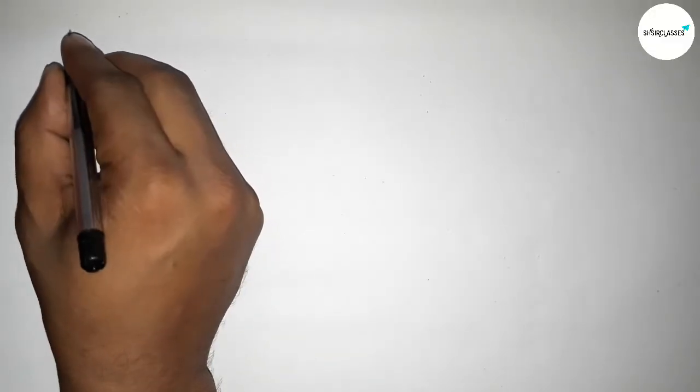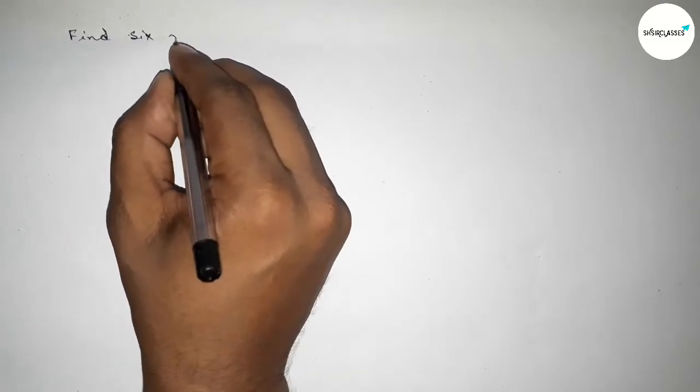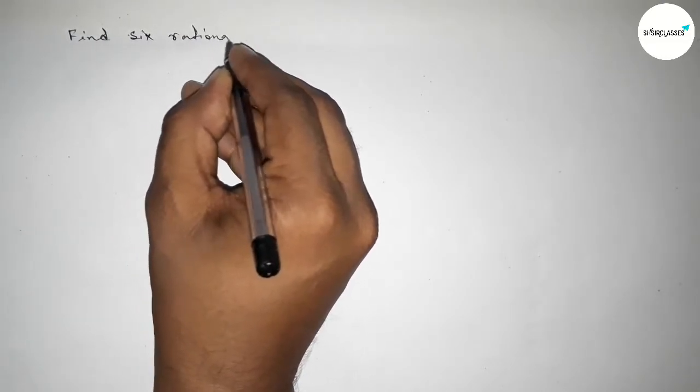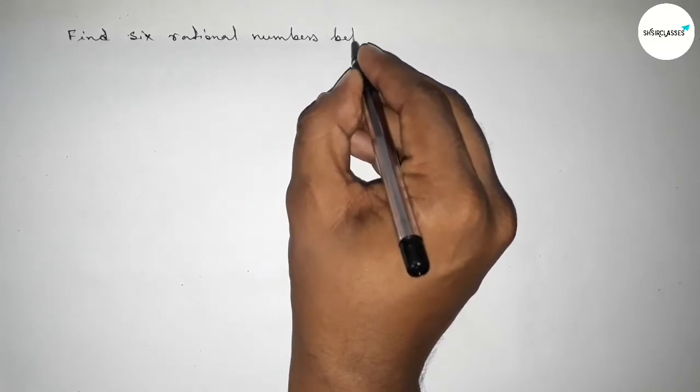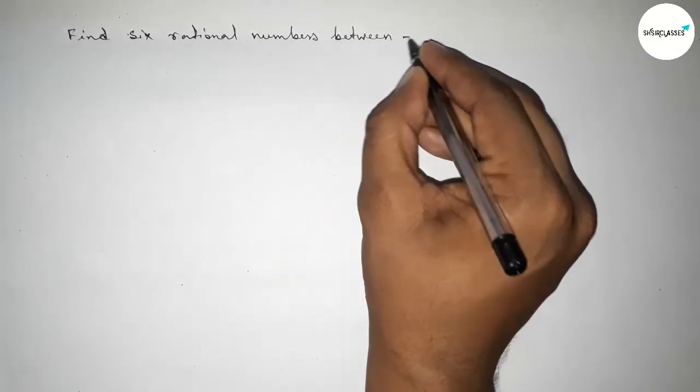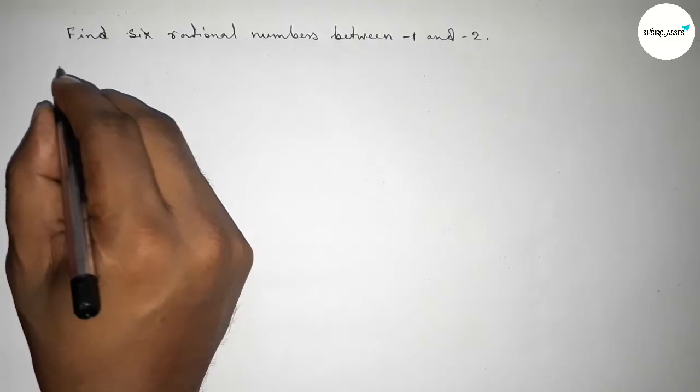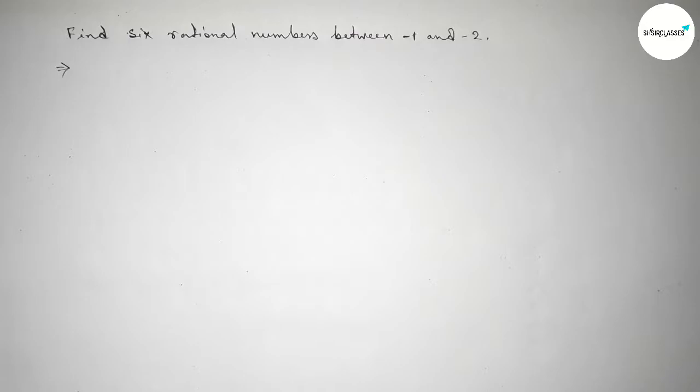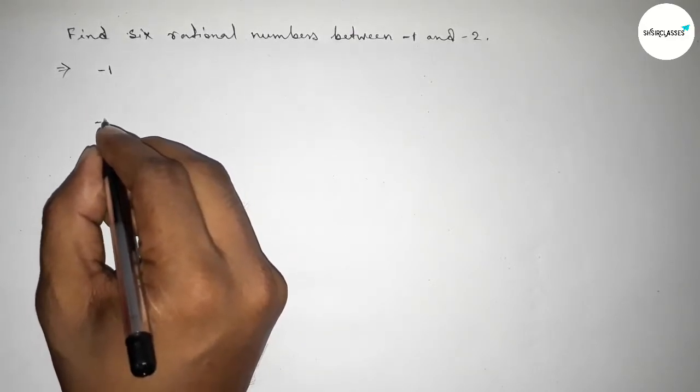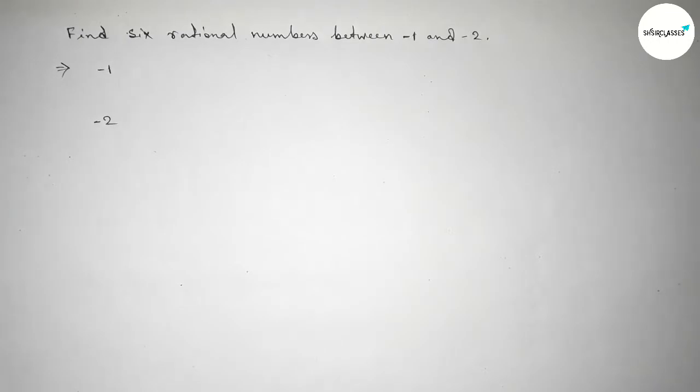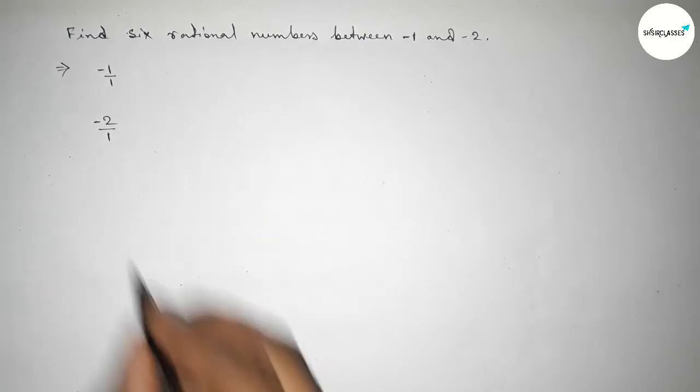Hi everyone, welcome to SI Share Classes. Today in this video we have to find out six rational numbers between minus 1 and minus 2. So let's start the video. First of all, write down here the given two numbers minus 1 and minus 2.